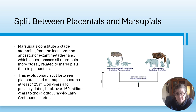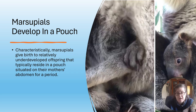The split between placentals and marsupials - we are placental mammals and marsupials include koalas. Marsupials constitute a clade stemming from the last common ancestor of extant, meaning living, metatherians, which encompasses all mammals more closely related to marsupials than to placentals. The evolutionary split between placentals and marsupials occurred at least 125 million years ago, possibly dating back to 160 million years ago in the mid-Jurassic to early Cretaceous period. Marsupials characteristically give birth to relatively undeveloped offspring that typically reside in a pouch on their mother's abdomen.